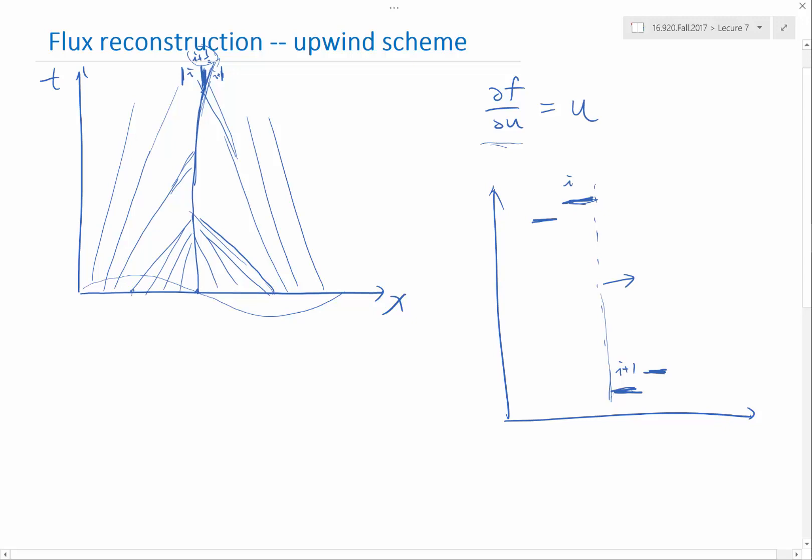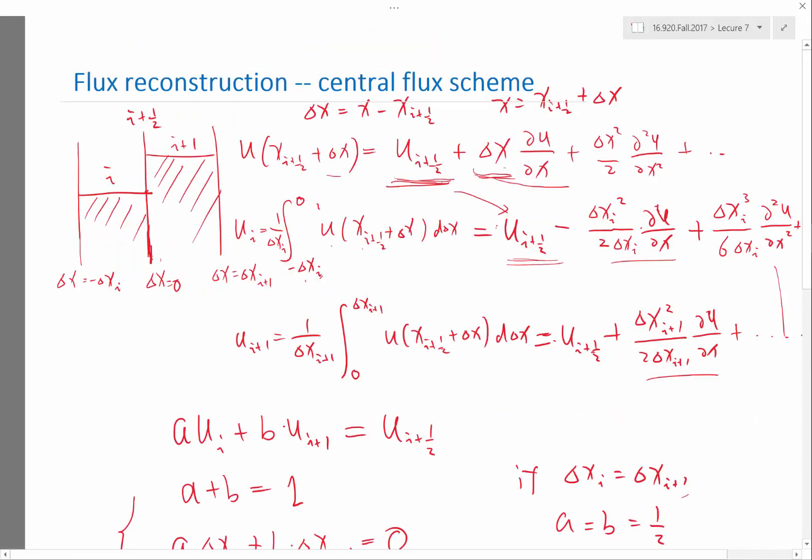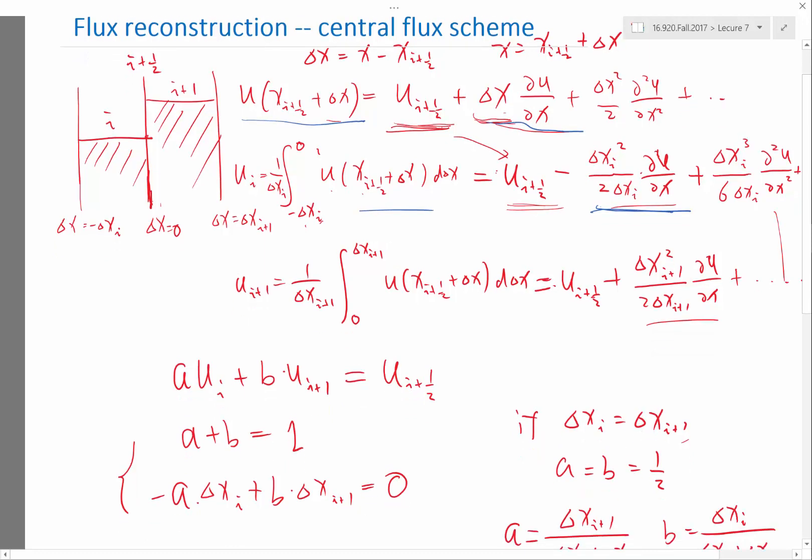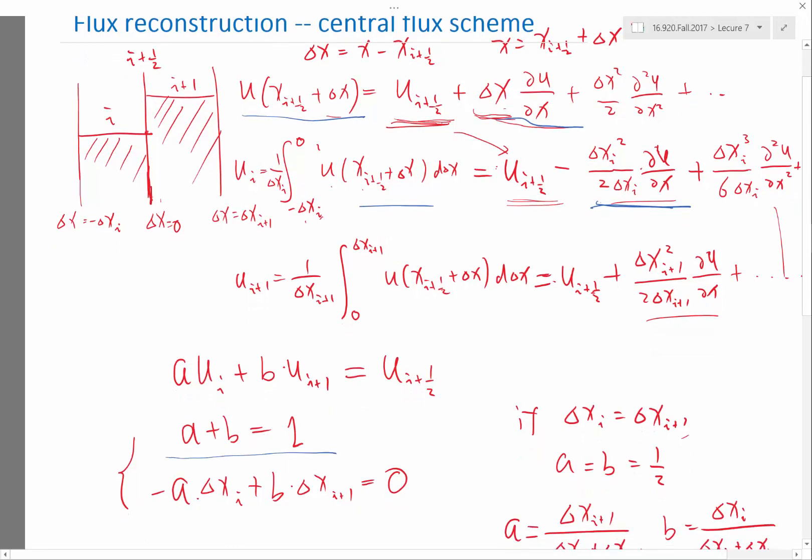And the sacrifice we are making is we will not get a second order accurate scheme in the smooth regions. So if I only use the upwind direction, if I only use the value here or the value here, then I cannot cancel even this term, right? So I can only satisfy this condition, my A...